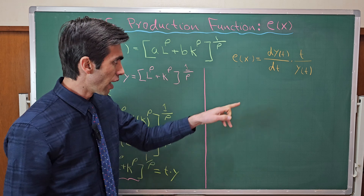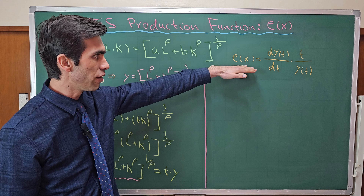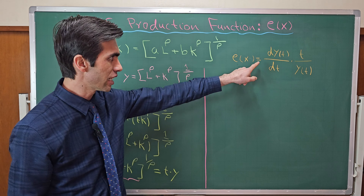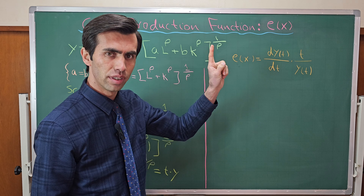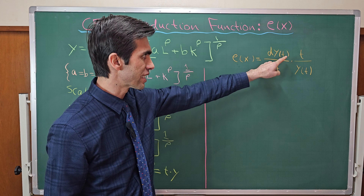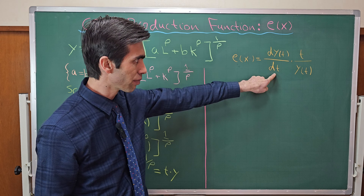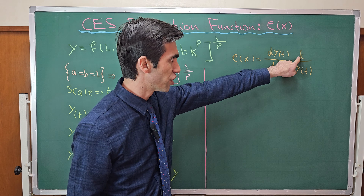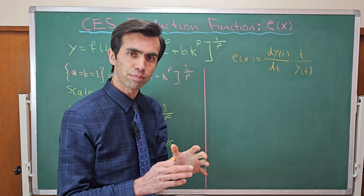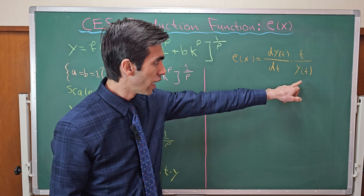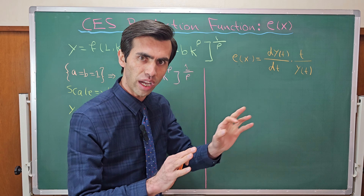We have the formula that elasticity of scale is equal to the derivative of output after scaling with respect to the scalar t, multiplied by t over y(t), the output after scaling. So now let's find out first of all y(t), the output after scaling.